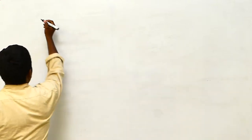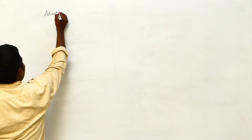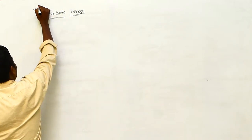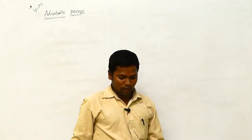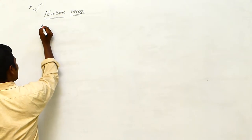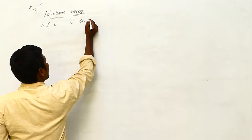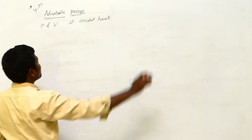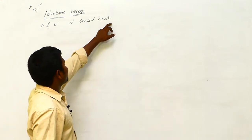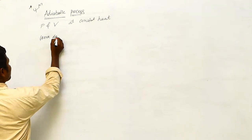Next, adiabatic process. This is also a four-mark question — very important. In this process, pressure and volume are changing at constant heat energy, and we are calling this the adiabatic process.